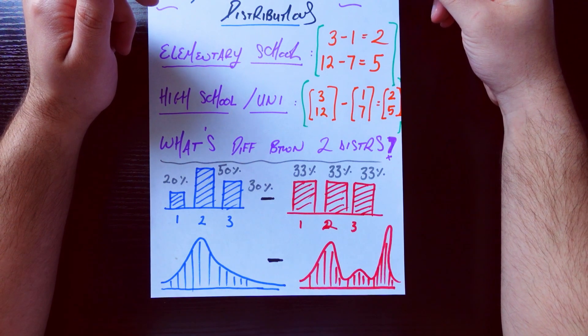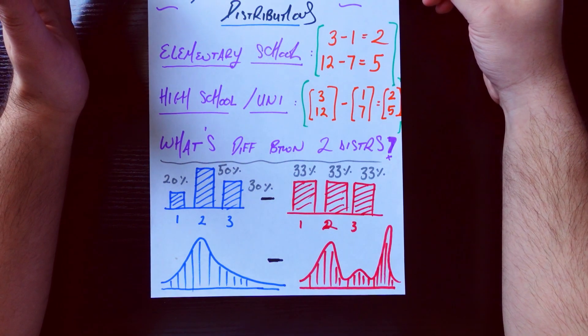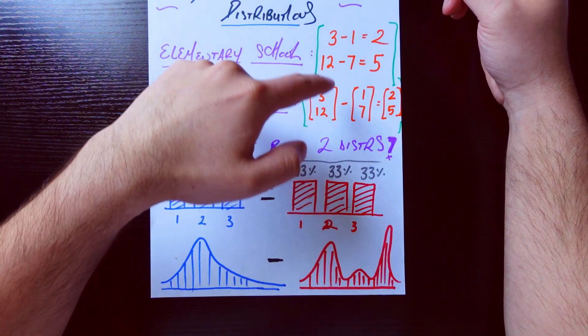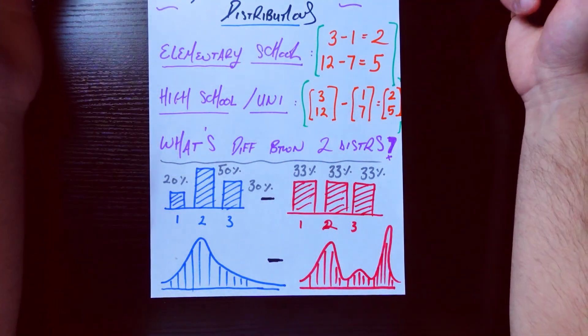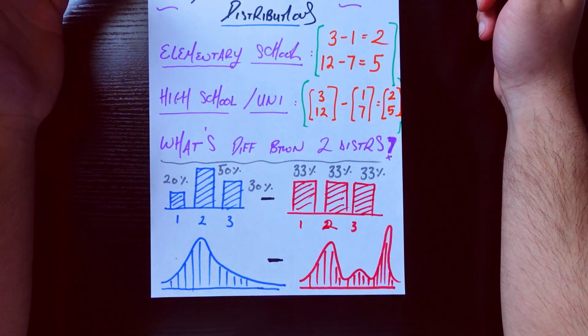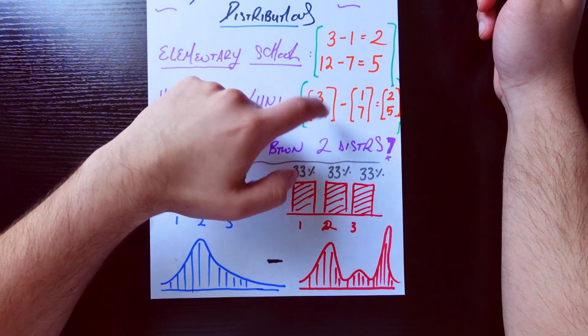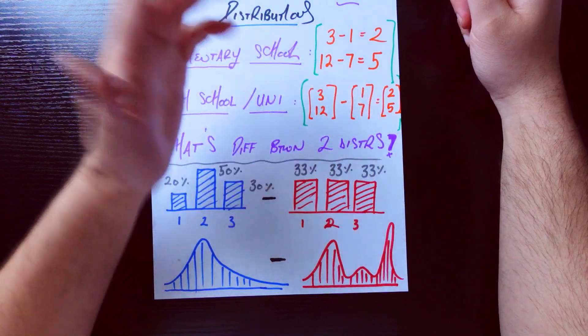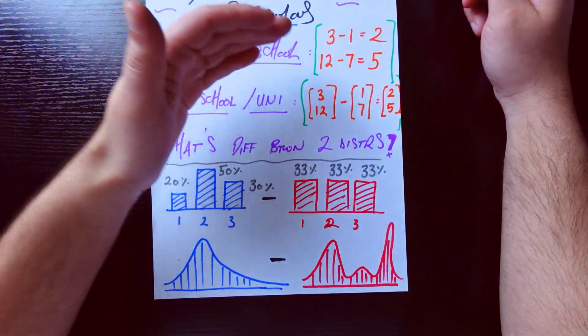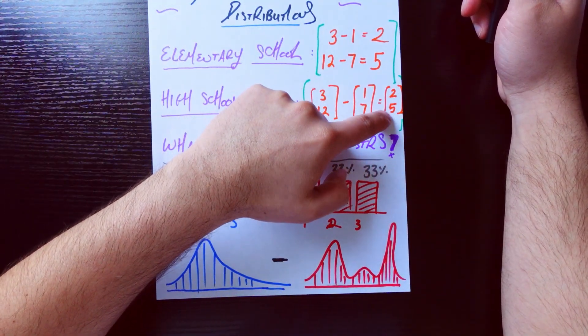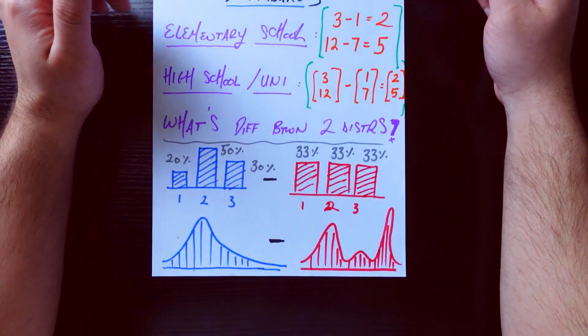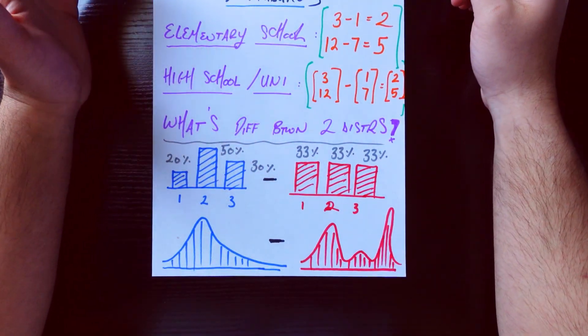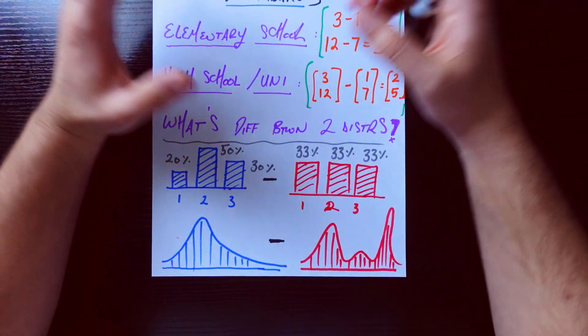Then we get to high school and university. Maybe we're studying math, so we start learning about linear algebra. We learn that actually these things we learn about called vectors also have the property that we can take differences of them. If we have the vector [3,12] in a two-dimensional space and we have the vector [1,7], what's the difference? We just kind of do it element by element, so it's the same exact thing—we get [2,5].